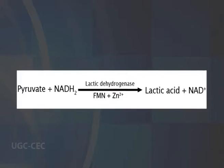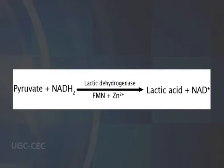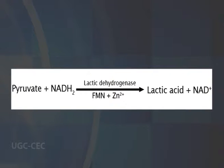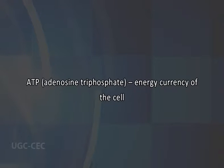The enzyme lactic dehydrogenase catalyzes the reaction in the presence of zinc (Zn²⁺) and flavin mononucleotide. Carbon dioxide is not produced. NAD+ is reused in glycolysis. Now let me address the energy currency of the cell, that is ATP.